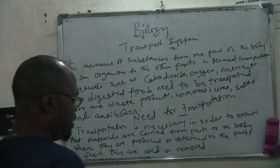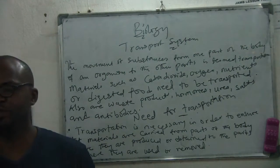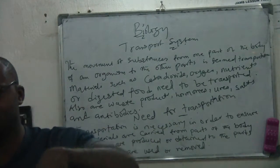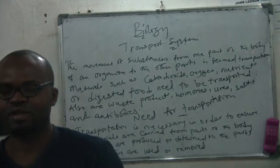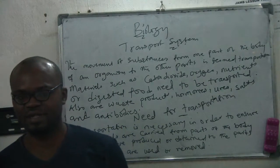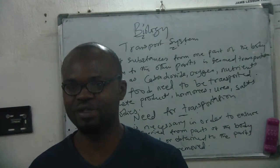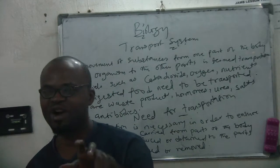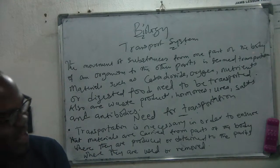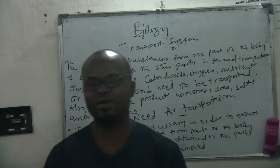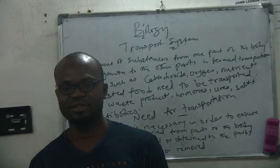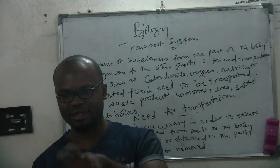Welcome. Today we are starting a new topic known as the transport system. In biology, we have four levels of life: number one is the cell, number two is the tissue, number three is the organ, and number four is the system. Each of these units of life can exist. Some animals exist at the cell level - give me an example.